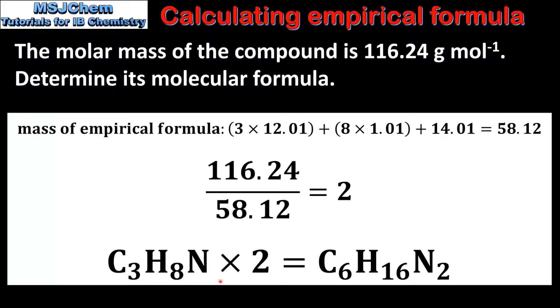The final step is to multiply the empirical formula by 2. So that's 2 times 3 for the carbon, 2 times 8 for the hydrogen, and 2 times 1 for the nitrogen. And this gives us the molecular formula, which is C6H16N2.